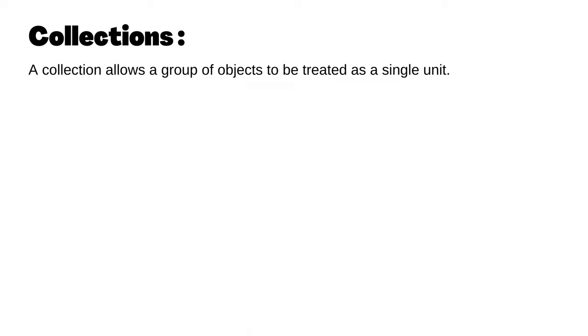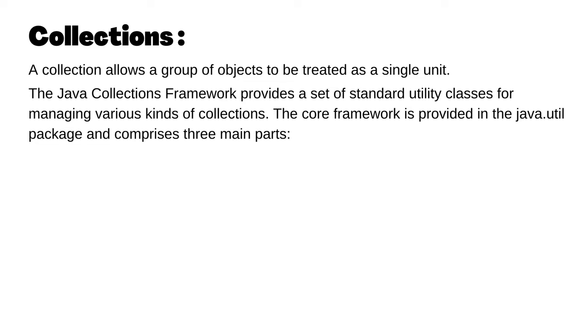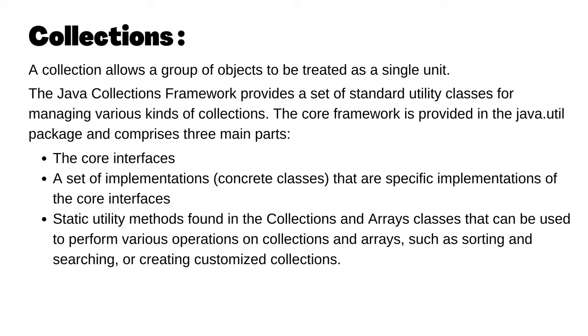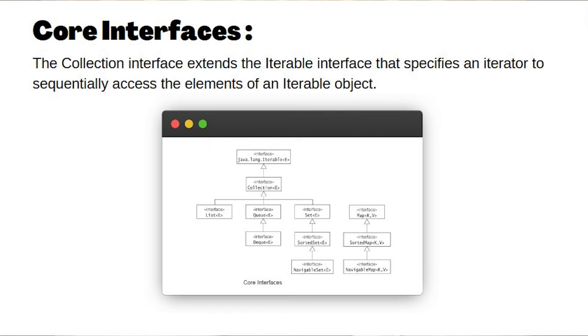Without any further ado, let's get started. First, let's understand what a collection is. A collection allows a group of objects to be treated as a single unit. The Java collections framework provides a set of standard utility classes for managing various kinds of collections. The core framework is in the java.util package and comprises three parts: core interfaces, implementations of those interfaces, and static utility methods.